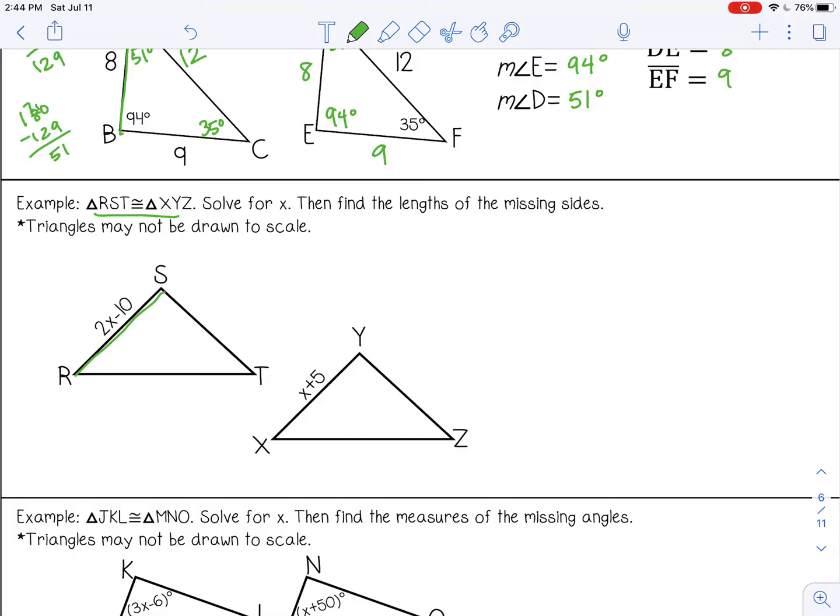These are corresponding sides, and since the triangles are congruent, we know those sides are congruent, which means the lengths are the same. So we can set the expressions that represent those lengths equal to each other.